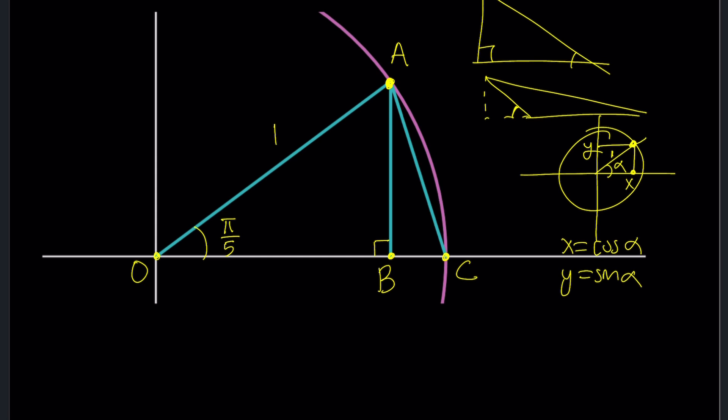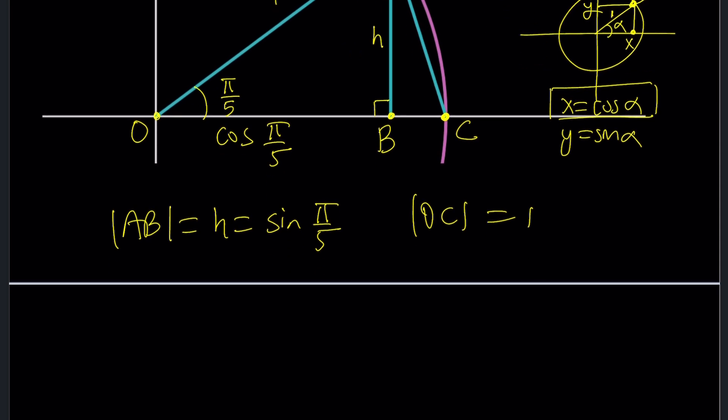And what about OB? I just told you x-coordinate is the cosine so OB is just going to be cos(π/5). Beautiful. And if you call this H, H is going to be, which is AB by the way, AB is H which is sin(π/5). And then what about BC? Good question right? OC is 1 because it's another radius. It's just another, you see it's important to know that C is on the circle so that OC is the radius.